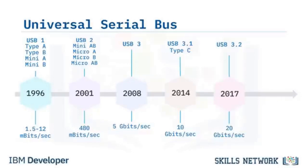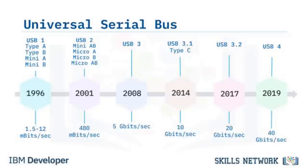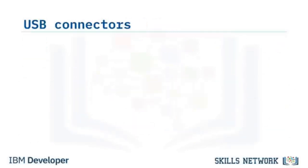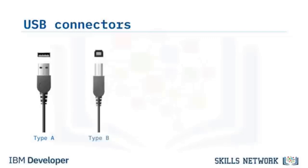The USB 3 series saw speeds increase to 5 gigabits per second with USB 3.0 in 2008. The Type C connector launched with USB 3.1 in 2014 at 10 gigabits per second, made backward compatible up to USB 2. USB 3.2 was released in 2017 at 20 gigabits per second, discontinuing Mini connectors. USB 4, based on Thunderbolt 3 and 4 protocol specifications, was released in 2019 supporting up to 40 gigabits per second over a Type C connector.